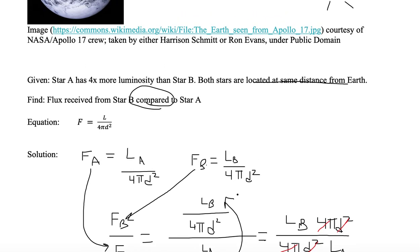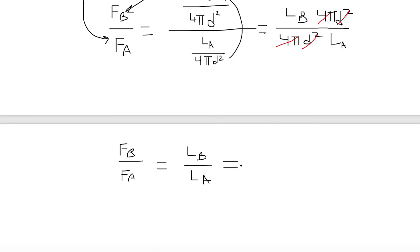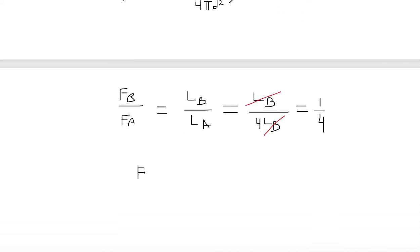We're given that star A has four times more luminosity than star B, which we put into an equation: the luminosity of A equals four times the luminosity of B. Now we substitute — where we see L_A, we put in four L_B. So flux of B over flux of A equals L_B divided by four L_B. The L_B terms cancel, and we're left with one quarter as our result. Our final answer is the flux of B relative to the flux of A is equal to one quarter.